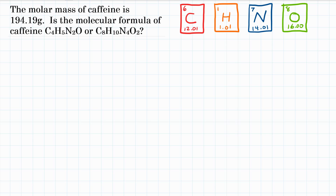This problem is essentially finding the molecular formula based off the empirical formula. For this problem, we're going to say our empirical formula is C4H5N2O because that formula is in the lowest whole number ratio. You can't divide 4, 5, 2, and 1 by anything to get smaller whole numbers, so that's our empirical formula. We're going to see if that is the actual formula or if the formula is some multiple of the empirical formula.